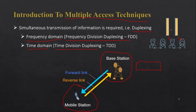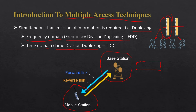In our scale example, applying frequency division duplexing means dividing the scale into four different parts and allocating an equal part to each of the four persons. If we apply time division duplexing, we allocate the full scale to one person for some amount of time, then switch to the next person for some amount of time, and so on — the whole resource is used by each person for a limited time slot.